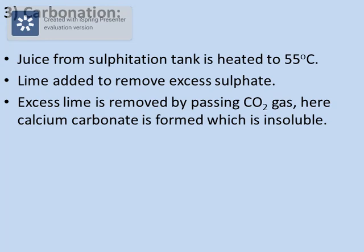Now the last step for purification of juice is carbonation. Juice from the sulfitation tank is heated to 55 degrees Celsius, and then we add lime to remove the excess sulfate. Excess lime is then removed by passing CO₂ gas. When CO₂ gas is passed, the lime forms calcium carbonate, which is insoluble and can be removed easily.